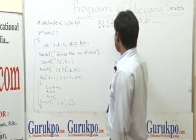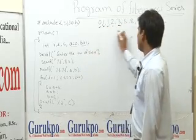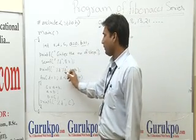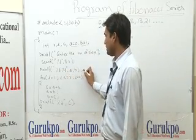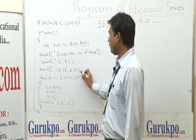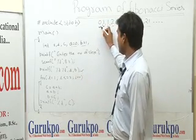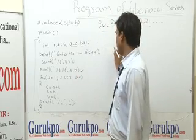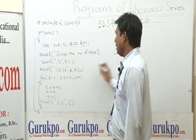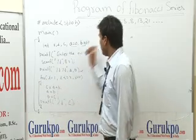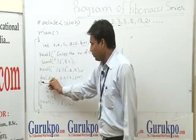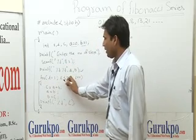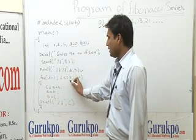Suppose the value of r is 10, meaning 10 steps. Next, the printf statement prints the starting values of the Fibonacci series, that is 0 and 1. Next, to print the series we use a for loop.